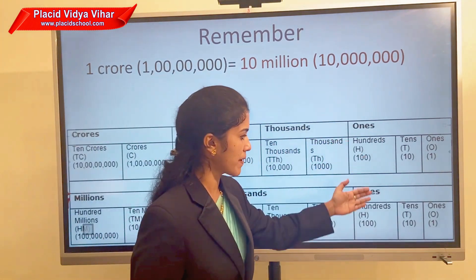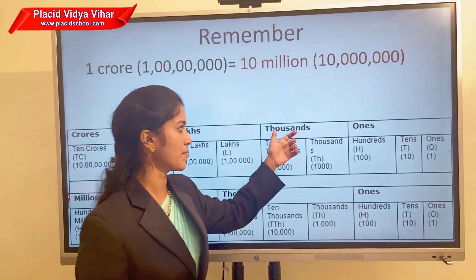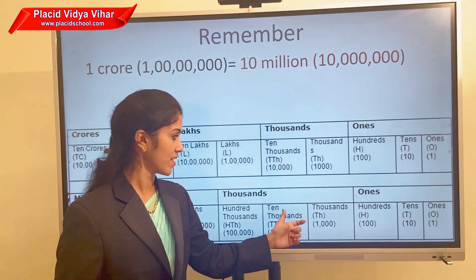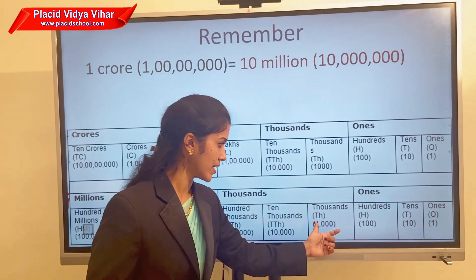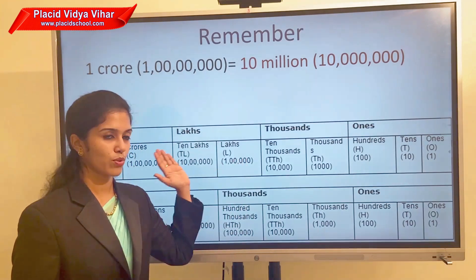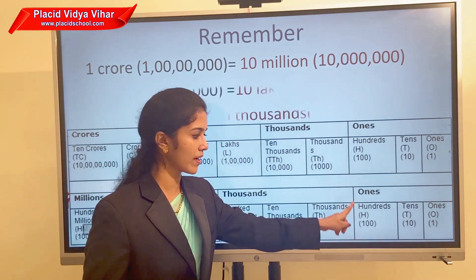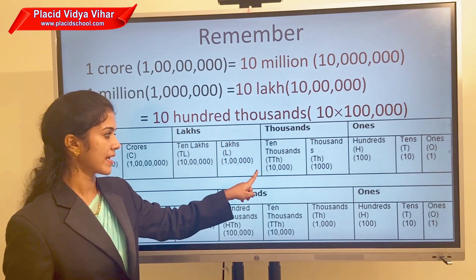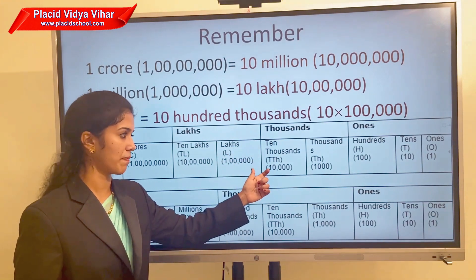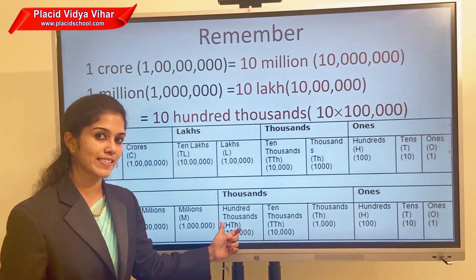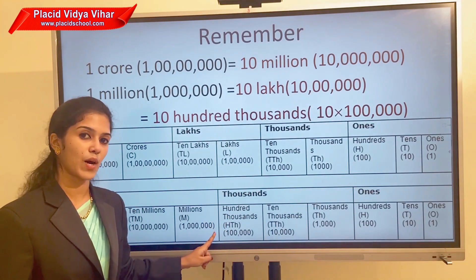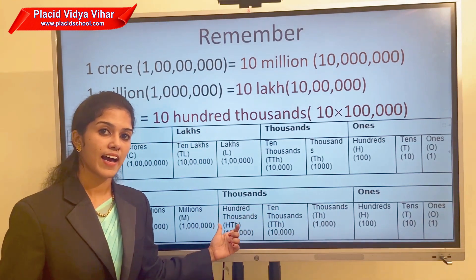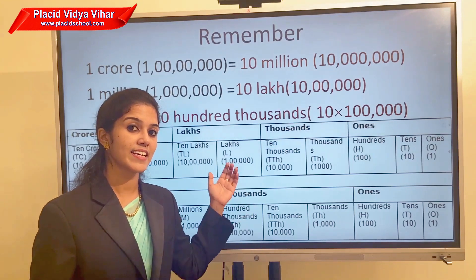The ones period is the same in both Indian and international systems. But when we move to the thousands period, in the Indian system we have only thousands and ten thousands, while in the international system we have thousands, ten thousands, and hundred thousands. So in the Indian system we place the first comma after three digits, but in the international system we place the first comma after three digits and the second comma after the next three digits — because thousands, ten thousands, and hundred thousands all come under the thousands period in the international system.